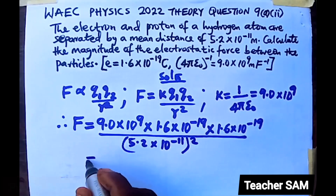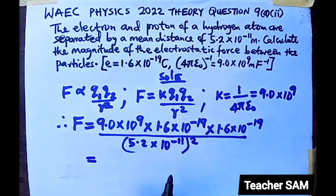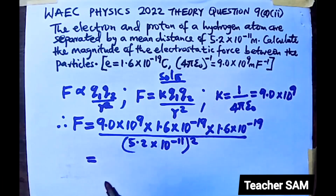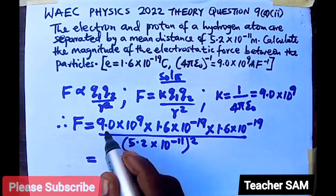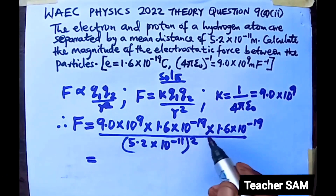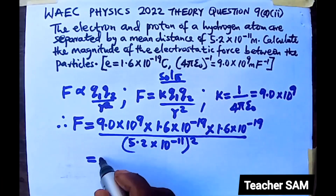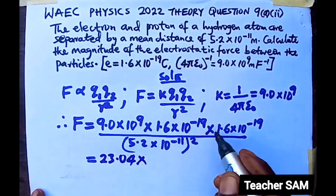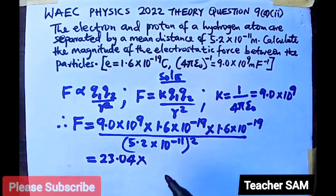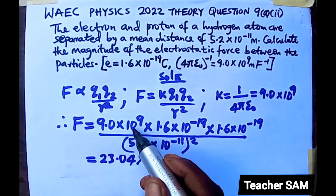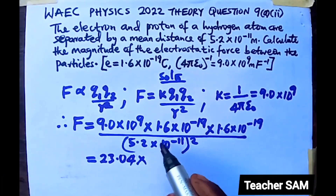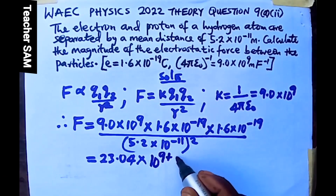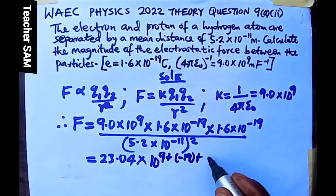Now I'll show you how to do this without a scientific calculator. Multiply the numbers: 9 times 1.6 times 1.6 gives 23.04. For the powers of 10 in the numerator, since we are multiplying and the bases are the same, we add the exponents: 10 raised to 9 plus negative 19 plus negative 19.